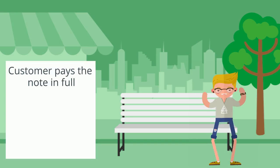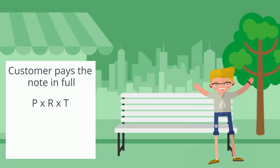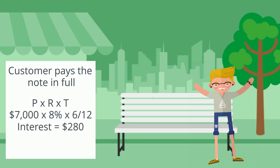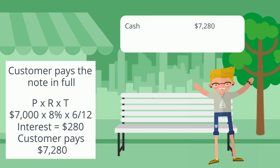It has been six months and the customer sends full payment for the note. Let's calculate how much interest we should recognize — remember the interest formula: principal times rate times time. For this note, the principal is seven thousand dollars, the rate is eight percent, and the time is six months, or six-twelfths. The total interest on this note for six months is two hundred and eighty dollars. Therefore, the customer would pay us a total of seven thousand two hundred and eighty dollars. We would debit cash for seven thousand two hundred and eighty dollars. The notes receivable is recorded only for the amount that was loaned — seven thousand dollars — so we credit notes receivable for seven thousand dollars.